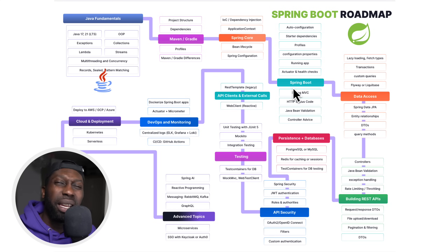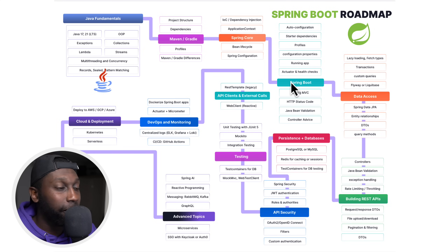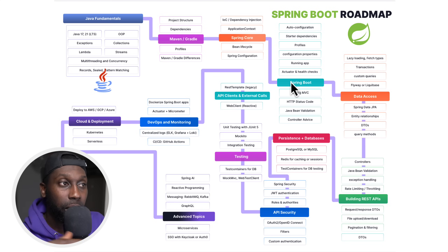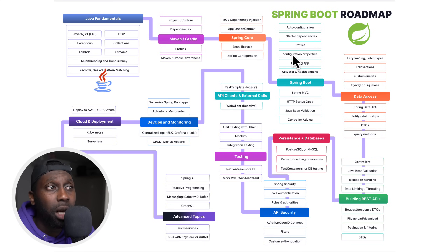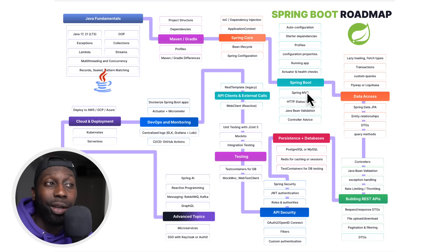Once you know Spring Core — the Spring Framework — you can move into Spring Boot. Spring Boot makes it easy to build back-end applications and RESTful APIs which serve clients. If you want to write a full-stack web application, you should be using React or Vue.js on the front end. When it comes to Spring Boot, there's auto-configuration, starter dependencies, profiles, configuration properties, running the application, the @SpringBootApplication annotation, and Spring MVC, which allows you to write RESTful APIs — and this is mainly what you'll be using Spring Boot for.